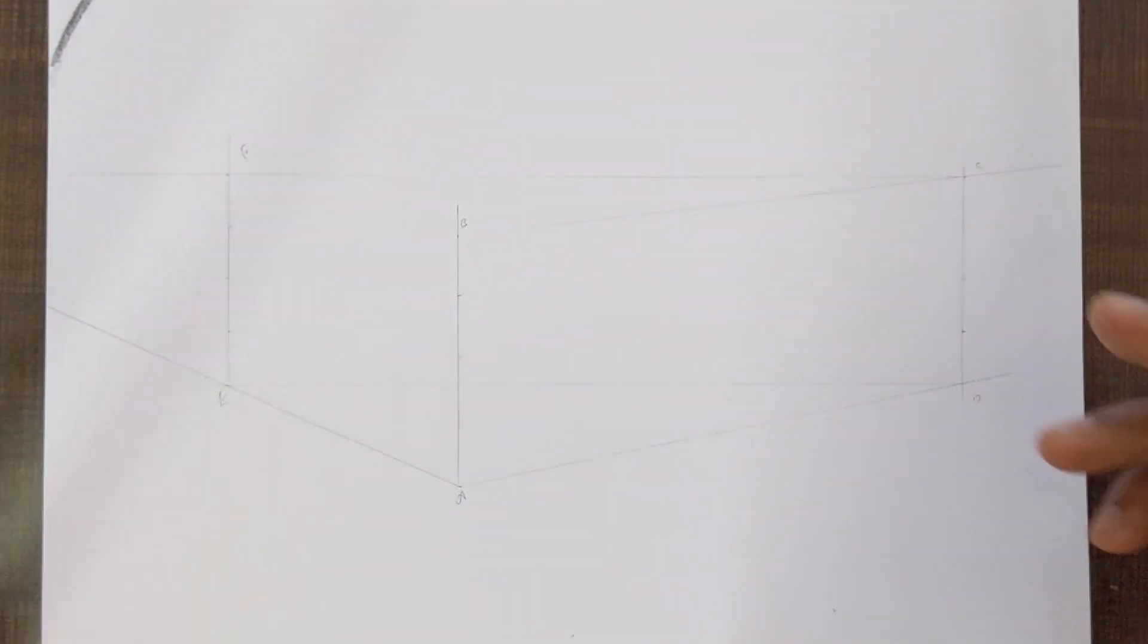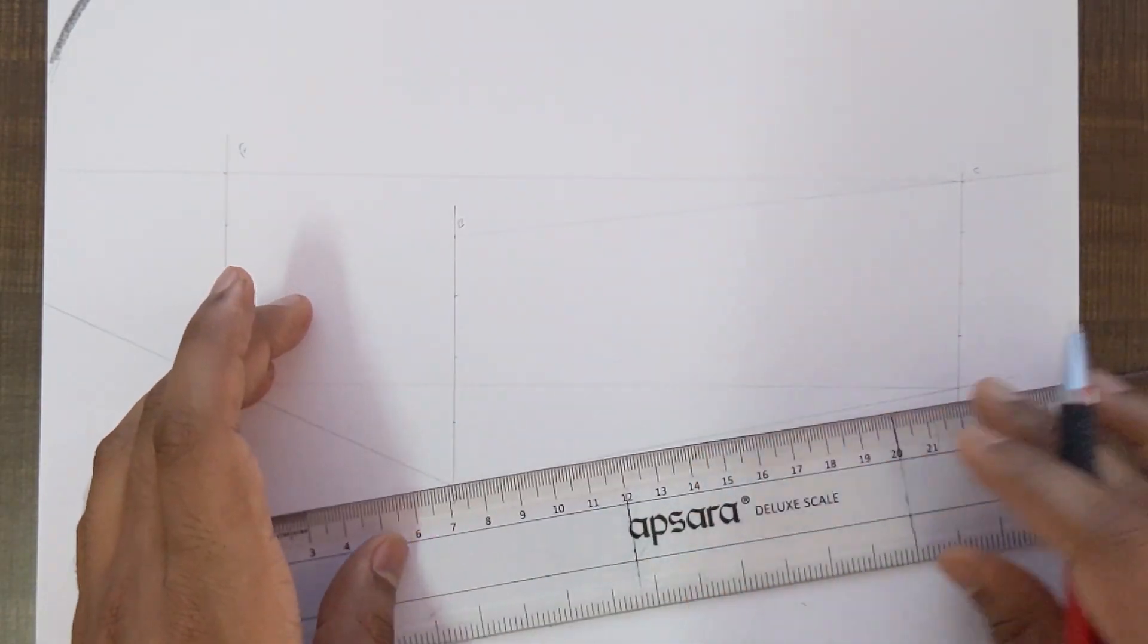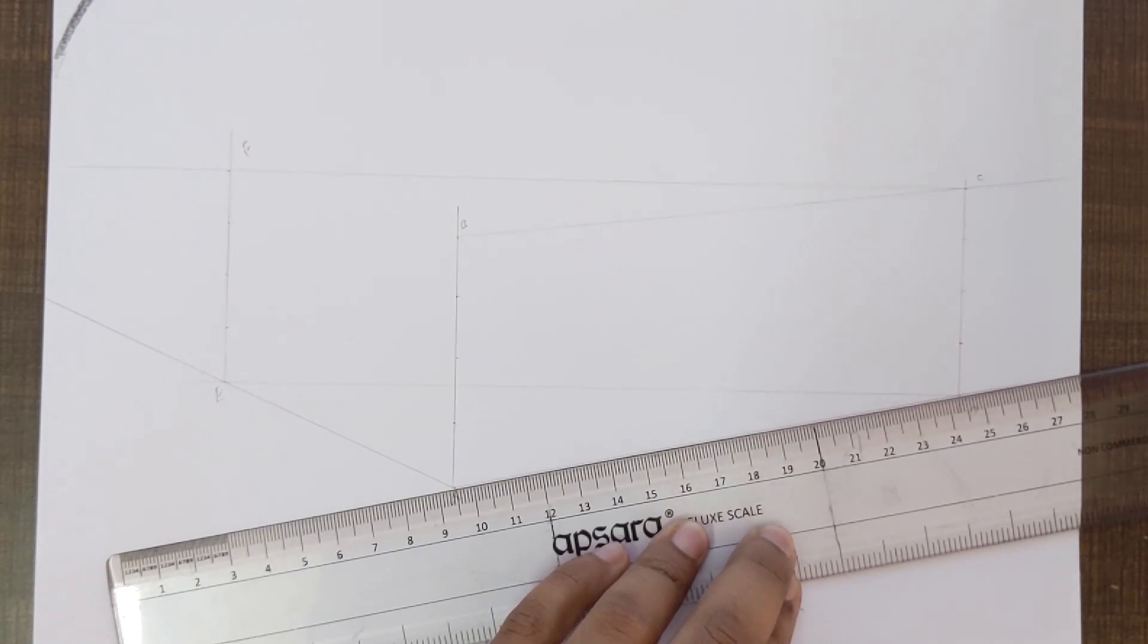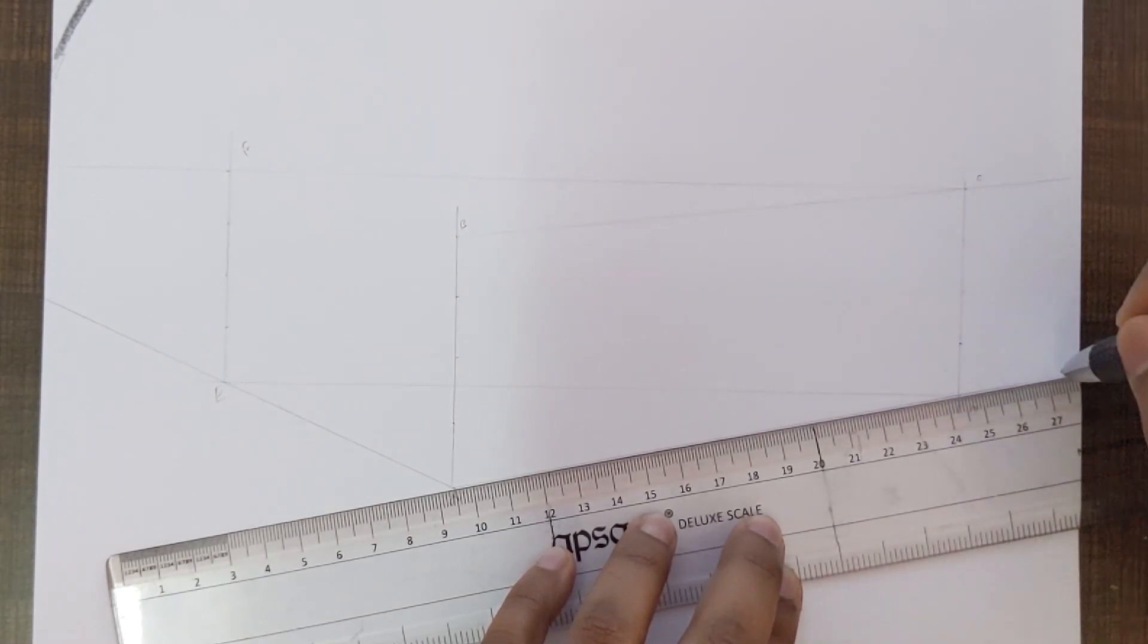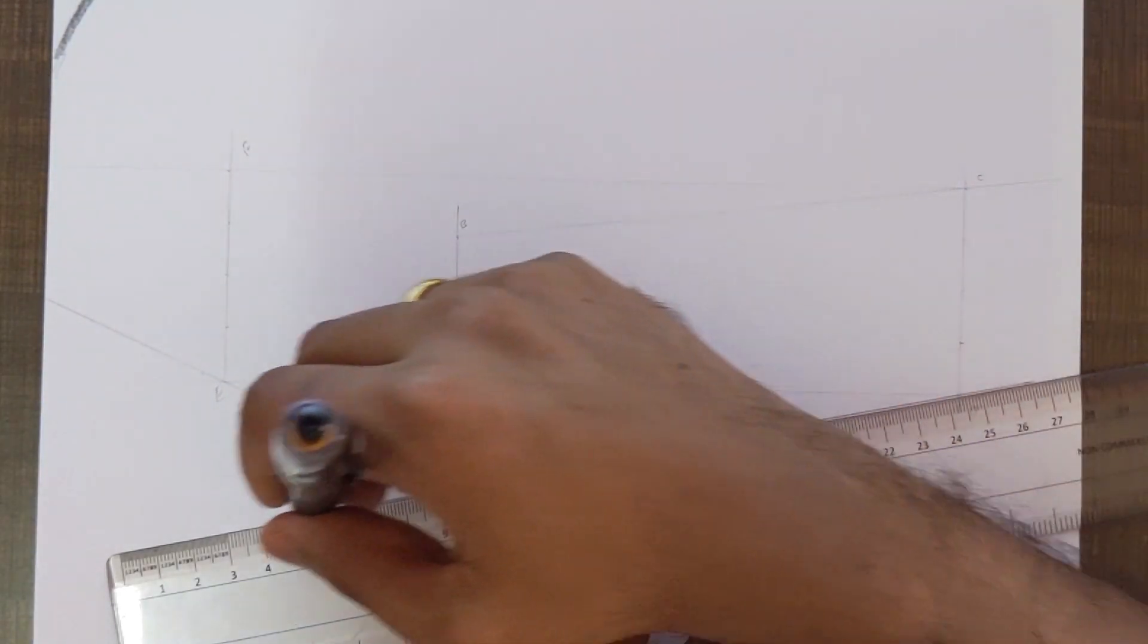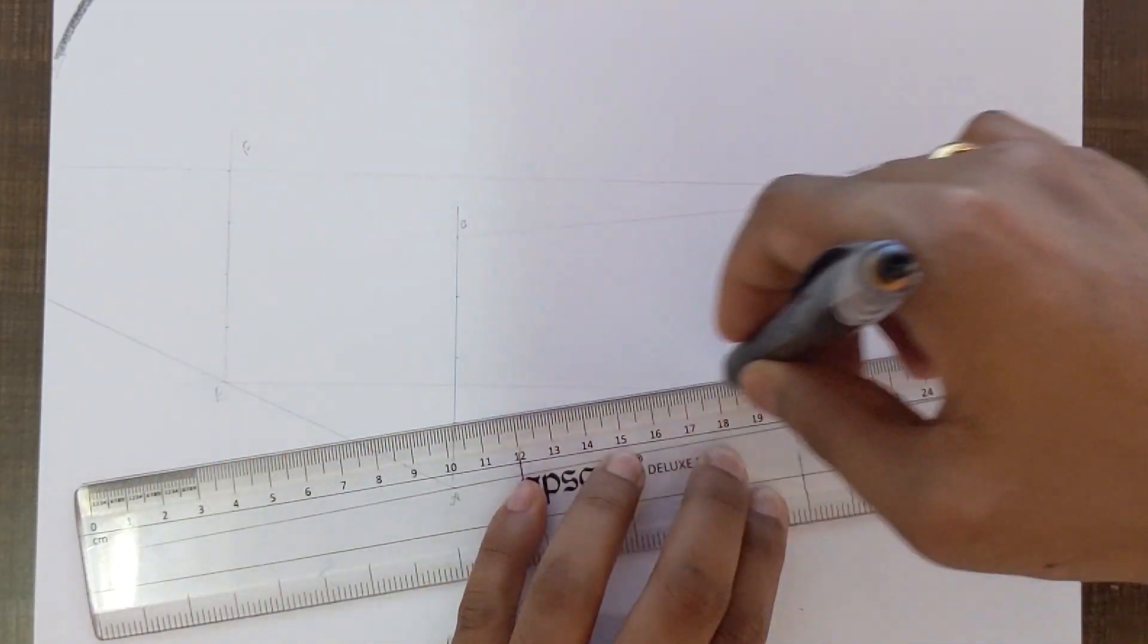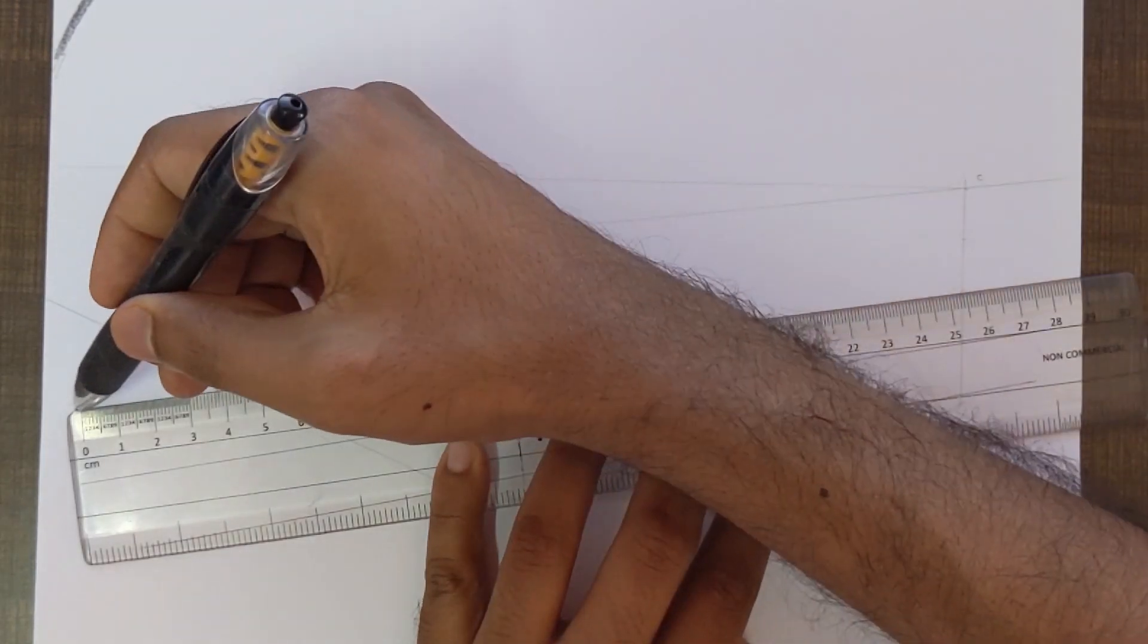Now that we have divided the lines, all we need to do is grab a straight edge and connect these dots. First, I'll extend this line at the bottom. I will use a pen for this. From this point to this point, and from this point to this point, just continue joining these points.